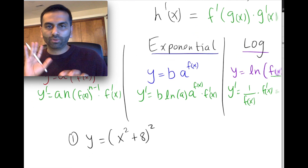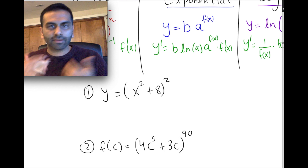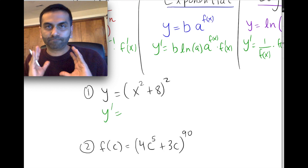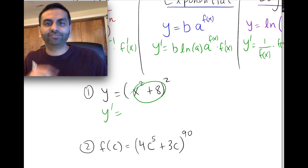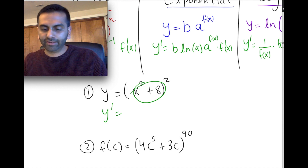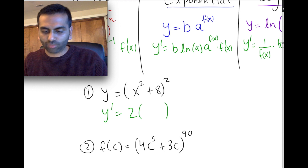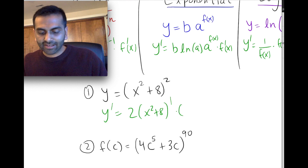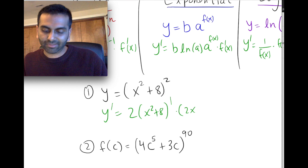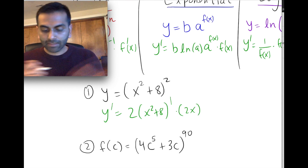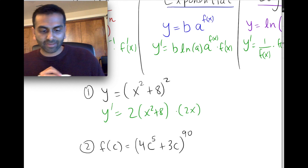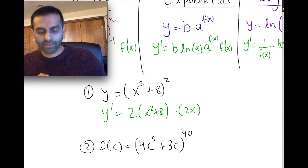Let's run through example problems. Say y = (x² + 8)². The outside function is something squared, so its derivative is 2 times whatever was inside to the first power. We transcribe what was inside — x² + 8 — and multiply by its derivative, which is 2x. So y' = 2(x² + 8)(2x). That's your answer — you can simplify if you want, but you don't need to.